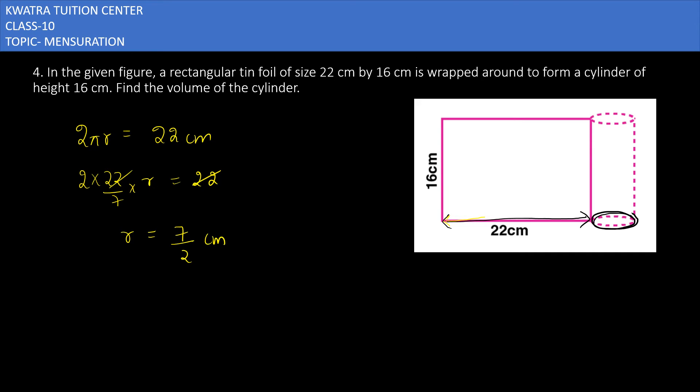You can easily find the value of volume. Volume of cylinder will be equal to πr²h. π will be 22 by 7, r square this 7 over 2 into 7 over 2, then h will be 16.